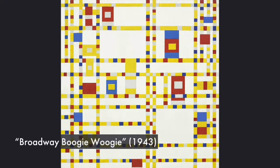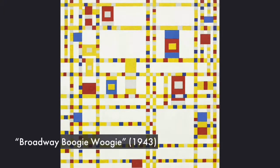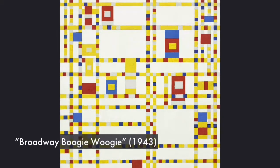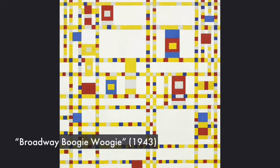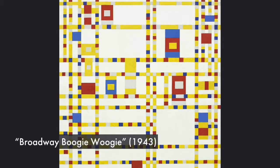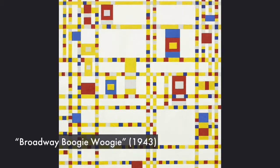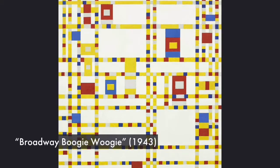Pete Mondrian knew that red, yellow, and blue were very important colors so he used them often in his artwork. Then he would paint thick black lines around them to create squares and rectangles.